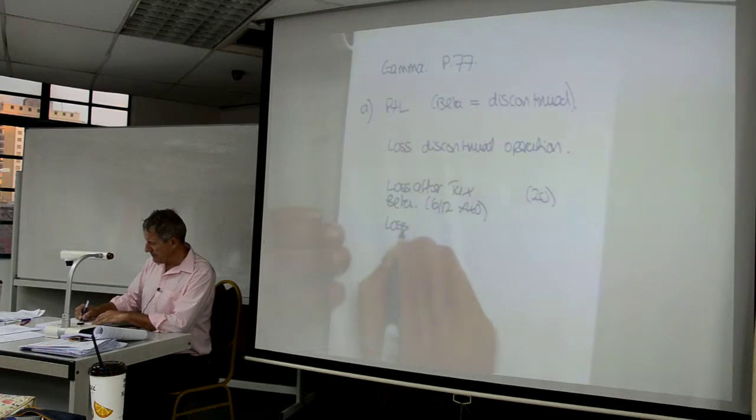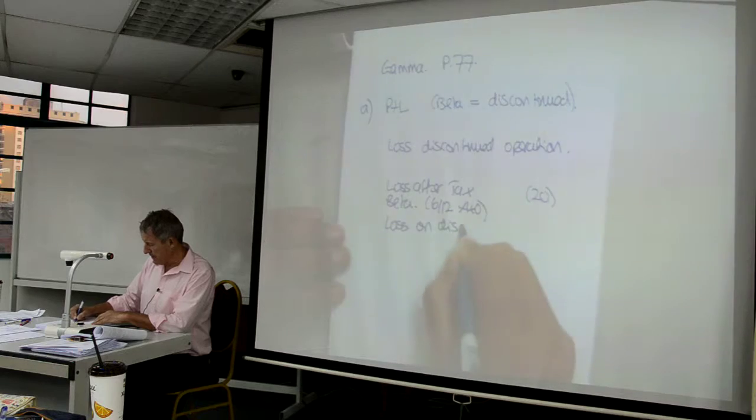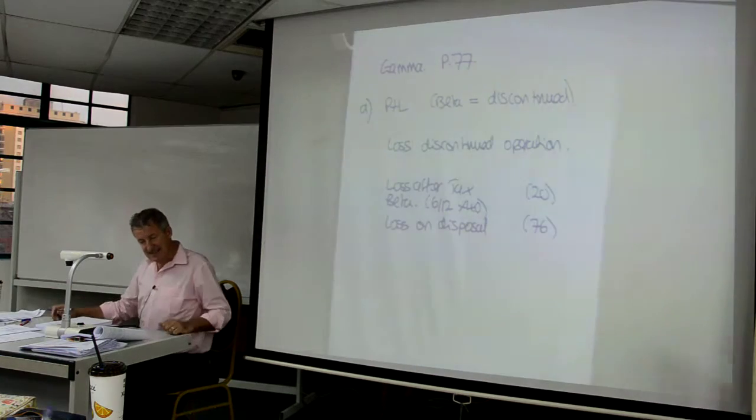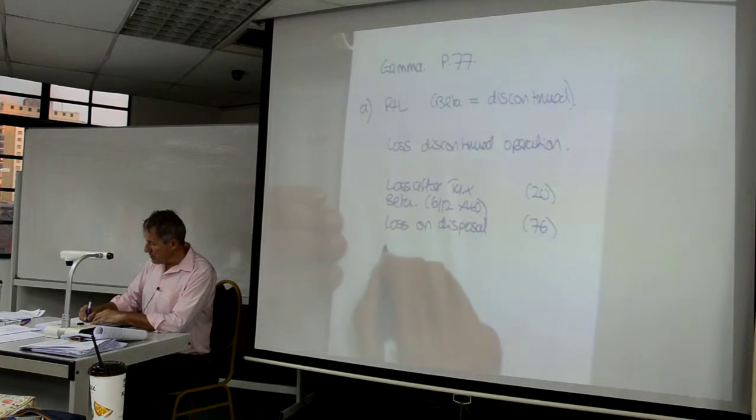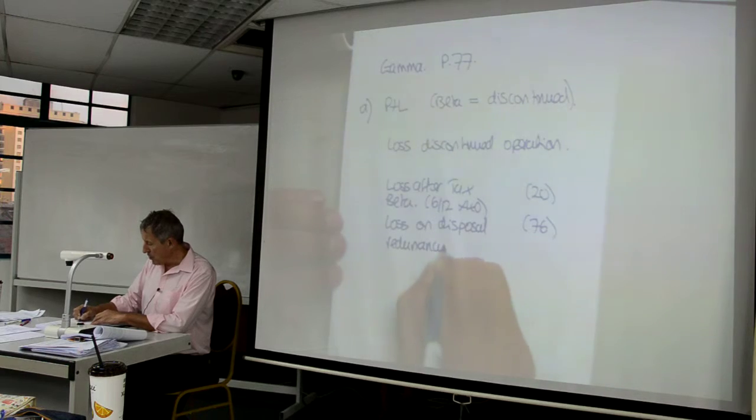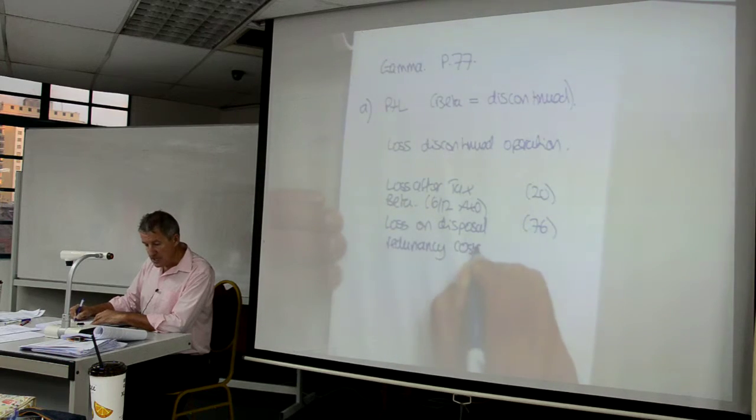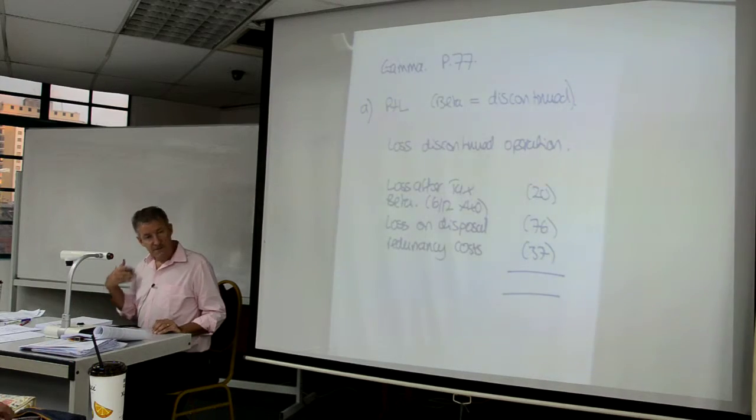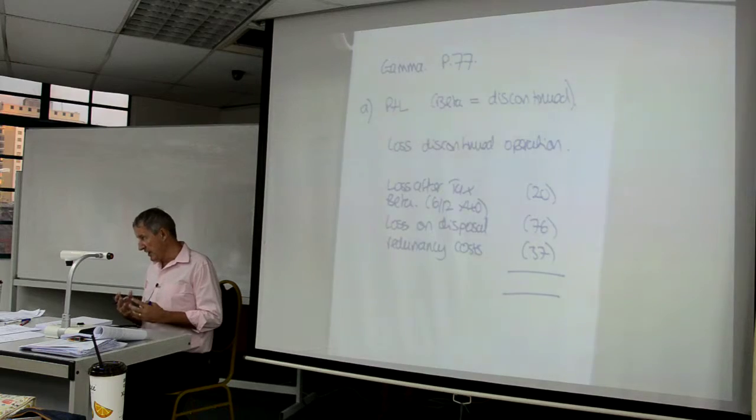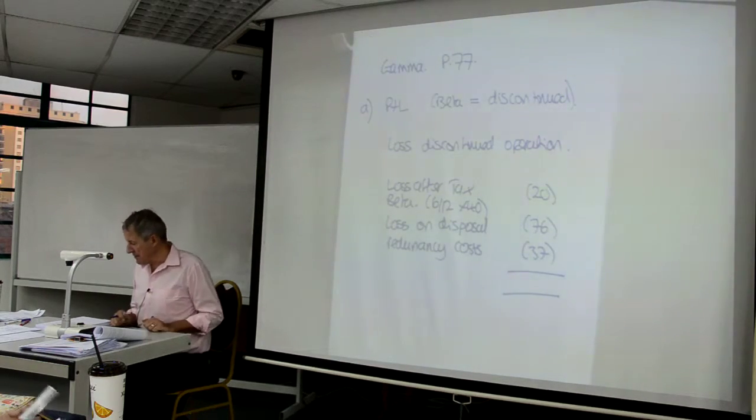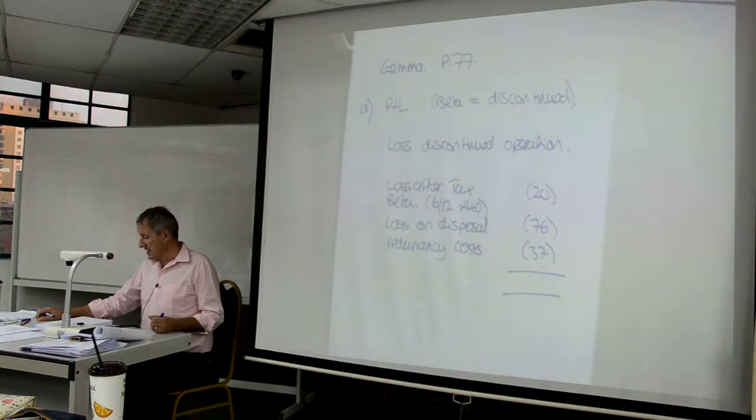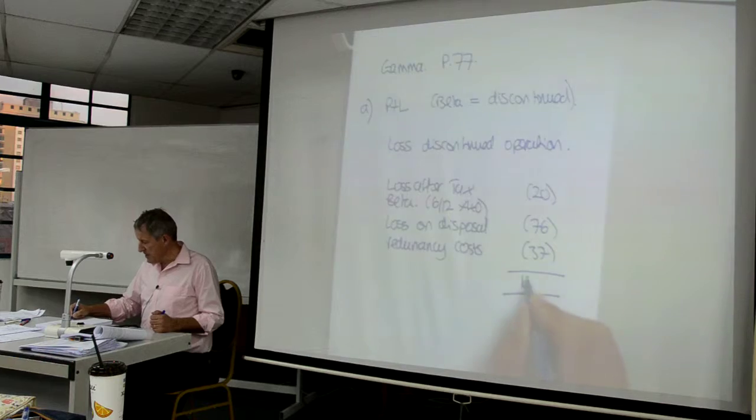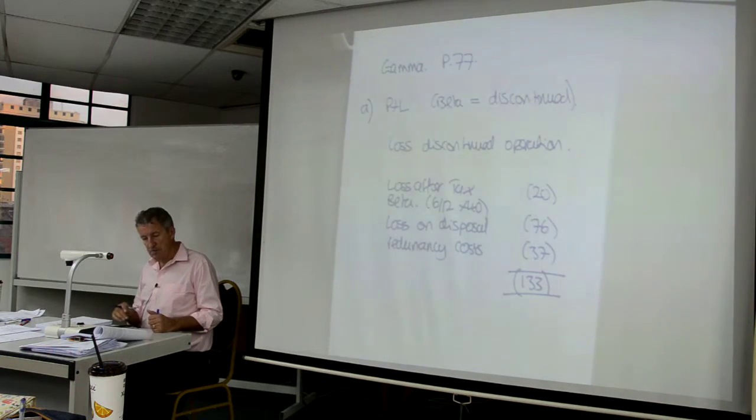But I also have the loss on the disposal. The loss on the disposal was 76. So when I sold the assets, the loss was 76. There was also the redundancy costs when you got rid of the staff, and the redundancy costs were 37. So the one line that represents the loss from the discontinued operation, which is non-recurring, won't happen again, needs to be separately represented, is 20 plus 76 plus 37, gives me an overall figure of 133.